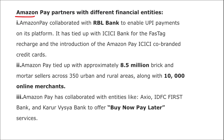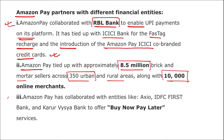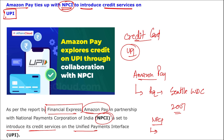Amazon Pay has partnered with different financial entities: with RBL Bank to enable UPI payments; with ICICI Bank for NEFT/RTGS, recharge, and the Amazon Pay ICICI co-branded credit card. Amazon Pay has also tied up with approximately 8.5 million brick-and-mortar sellers across 350 urban and rural areas and 10,000 online merchants. They collaborated with entities such as Xiaomi, IDFC First Bank, and Karur Vysya Bank to offer Buy Now Pay Later services. Amazon Pay is headquartered in Seattle, Washington.